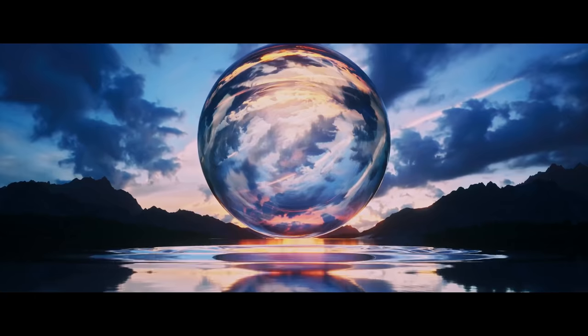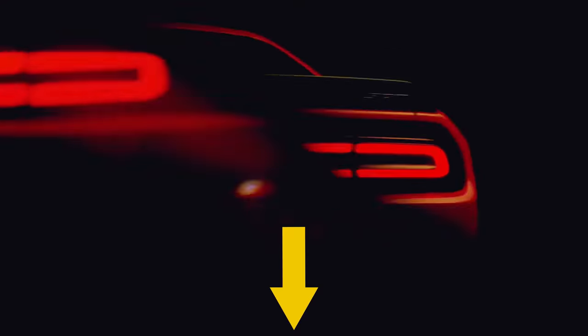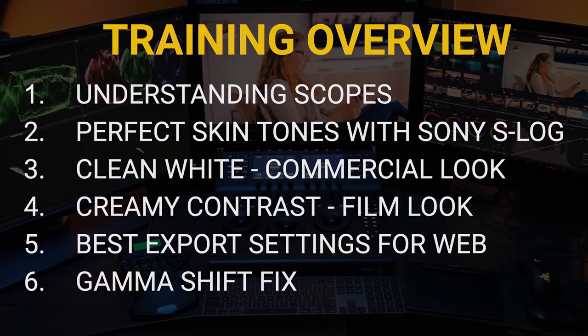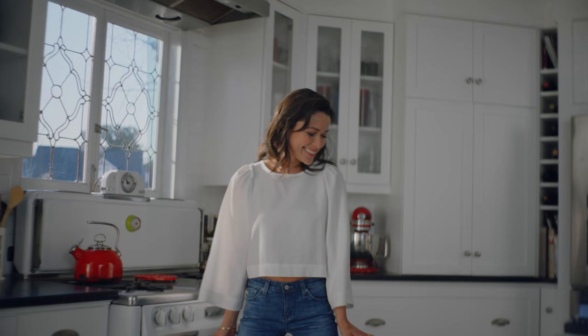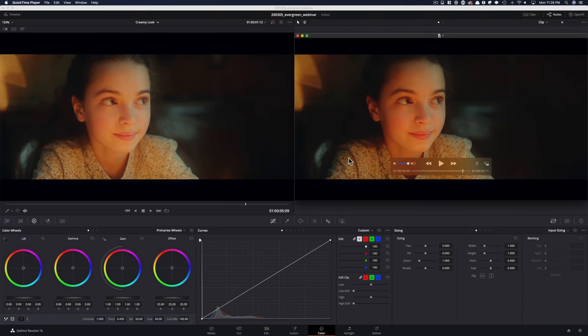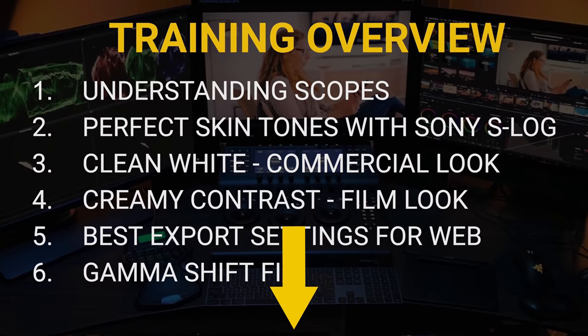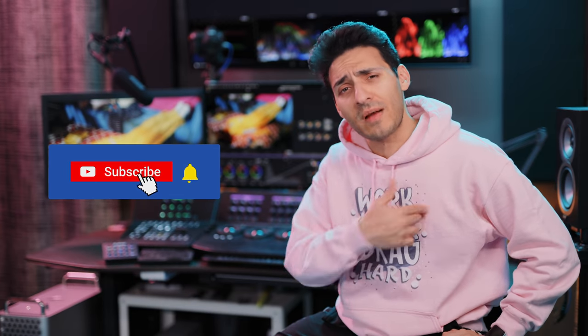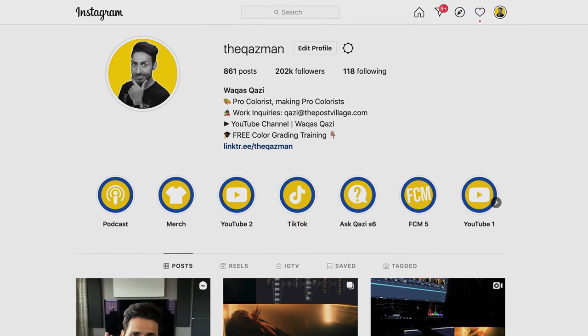I'm going to be showing you a really cool technique that is brand new to DaVinci Resolve, so get super excited. Grab a notepad, and for those that want to level up their color grading game, check out the link in the description — a one-hour free training where I'll show you how to get perfect skin tones out of Sony S-Log 8-bit footage, the clean white commercial look, the creamy film look, how to fix the dreaded gamma shift, and much more. If you're enjoying the content, smash that like button and subscribe.